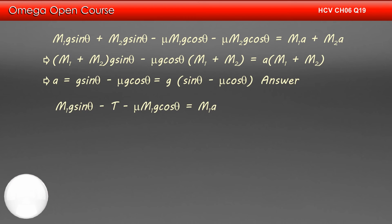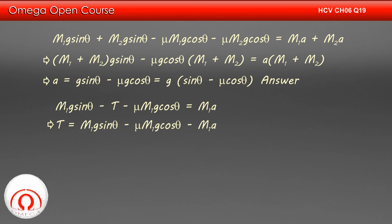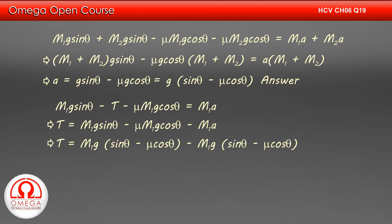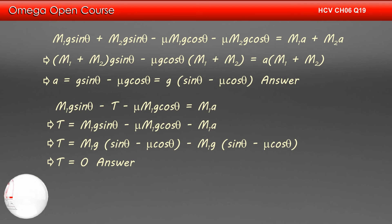From equation 1, we have M1g sin theta minus T minus mu·M1g cos theta equals M1a, which implies T equals M1g sin theta minus mu·M1g cos theta minus M1a. Putting the value of a, we get T equals M1g(sin theta minus mu cos theta) minus M1g(sin theta minus mu cos theta). Thus, T equals 0. This is the answer to the second part of the question.